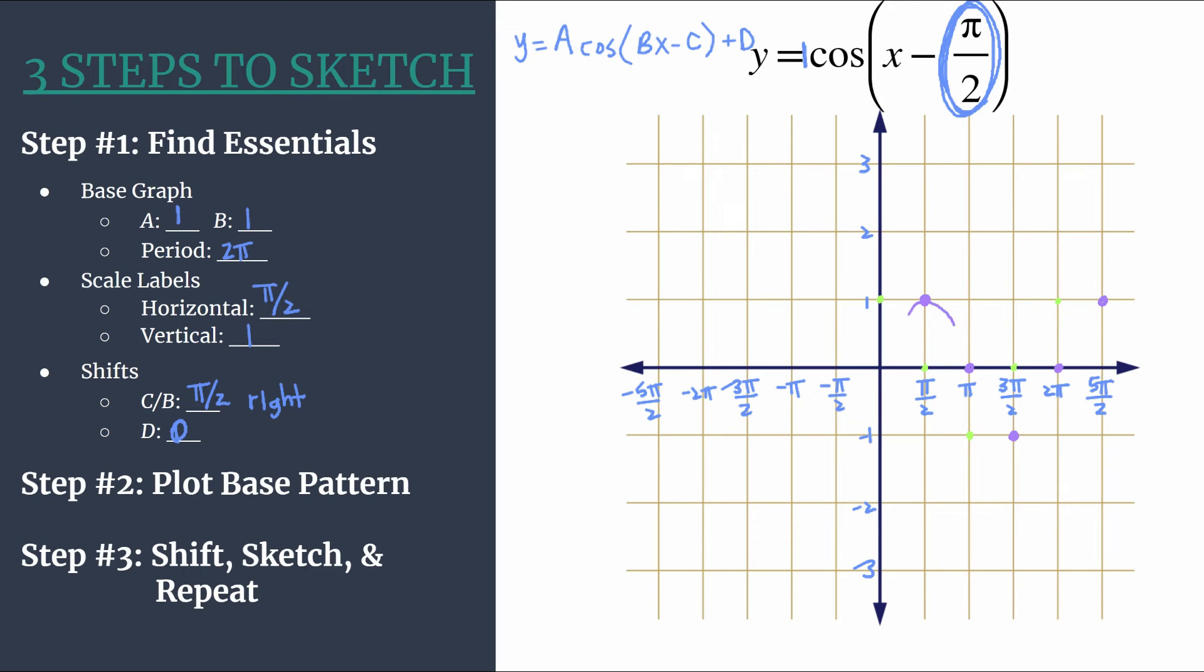And then we can sketch in our cosine curve. So basically, we took the parent graph y equals cosine x, and we shifted it to the right by pi over two. This is a very straightforward shift. And you probably could accomplish this without even going through this whole method if you just know what the parent graph looks like. But this is a good example to make sure we really understand all of the pieces in this method, and how to put them into place.